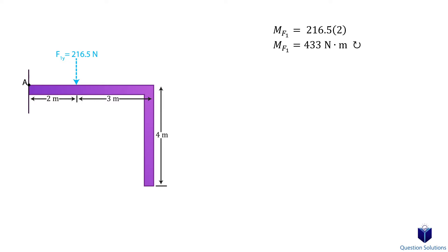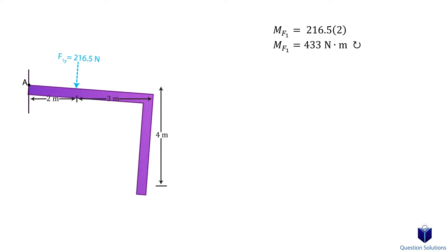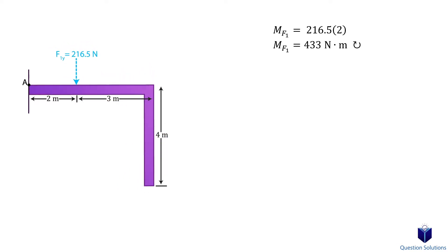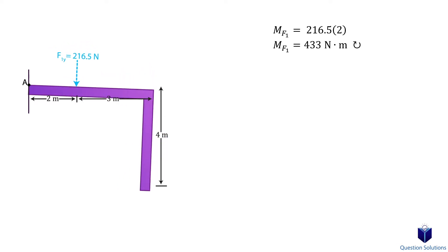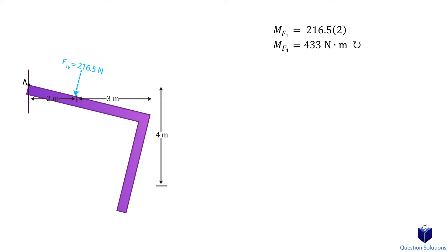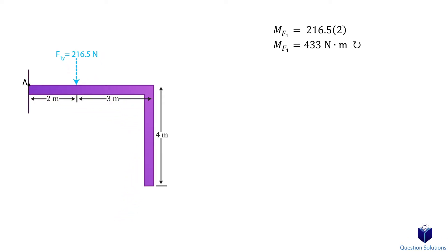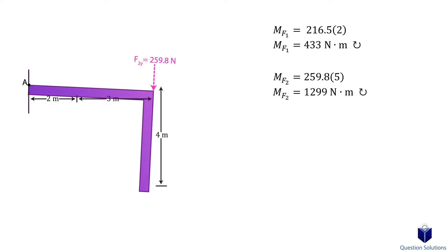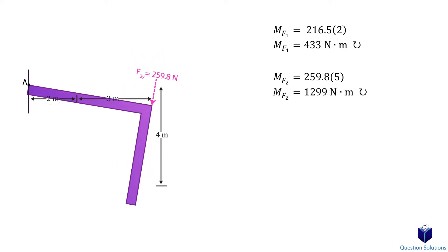So the moment is then the multiplication of the two. We also need to show which direction the bar would turn if the moment is applied. Imagine this bar is free to rotate about point A — if we apply the Y component of the force, notice how it would turn clockwise. Now we look at force F2. The perpendicular distance to the Y component is 5 meters, and the direction is the same since it would also spin clockwise.